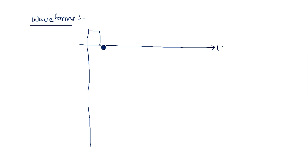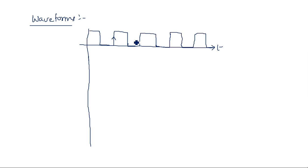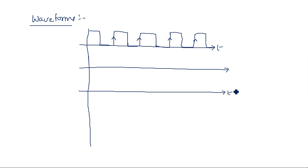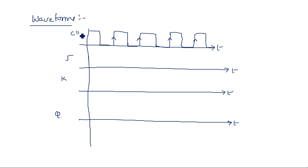Take a clock signal which is a train of rectangular pulses — 1, 0, 1, 0 like that. Mark every rising edge transition. Take J as one input, K as the second input, and Q as the output. Q-bar is the complement of Q.